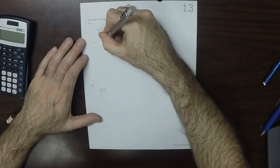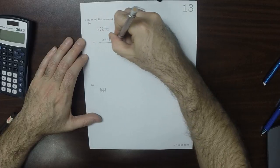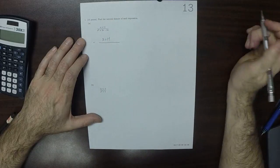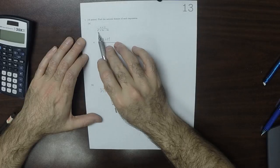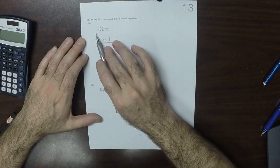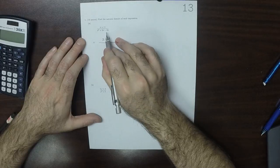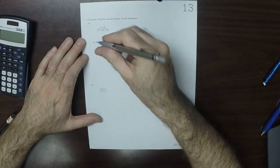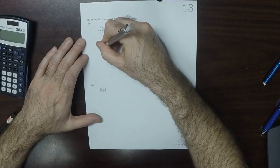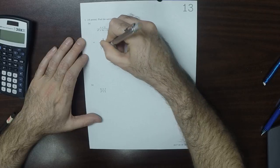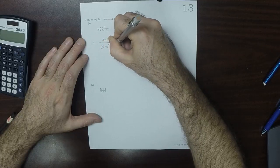So x plus 11, and then the denominator is monic. So can we think of two numbers whose product is negative 24 and whose sum is positive 2? How about x plus 6 and x minus 4?